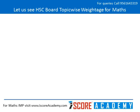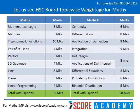Let us see HSE board topic wise weightage for maths. Maths 1 comprises of 9 chapters and maths 2 comprises of 9 chapters. Total with option make 58 and total with options make 58.